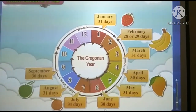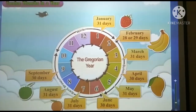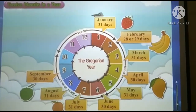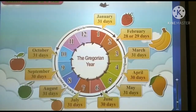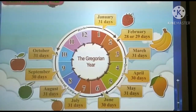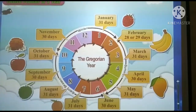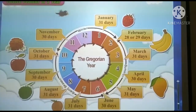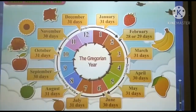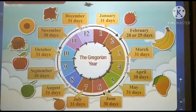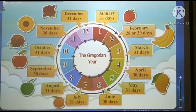Then comes September. September is the ninth month and has 30 days. Then comes October. October is the tenth month and has 31 days. Then comes November. November is the eleventh month and has 30 days. And December comes last. December is the twelfth month and has 31 days.